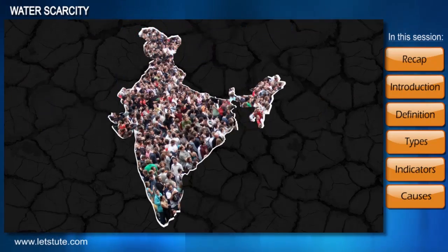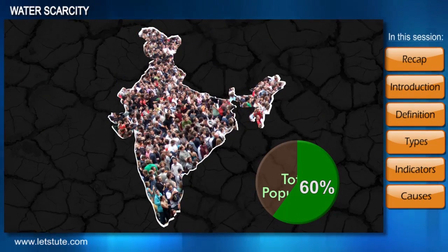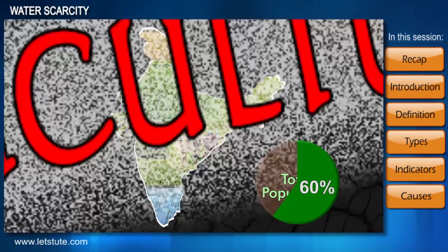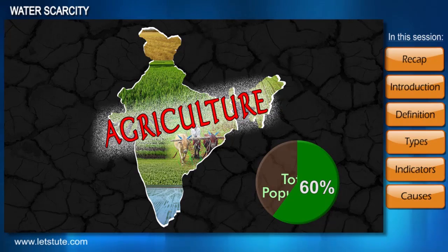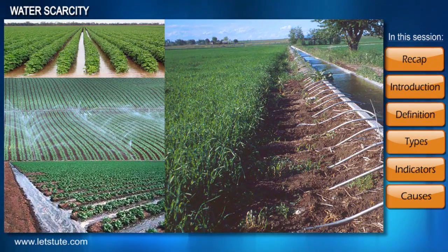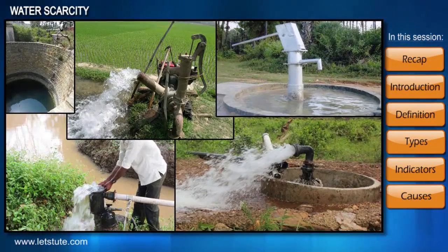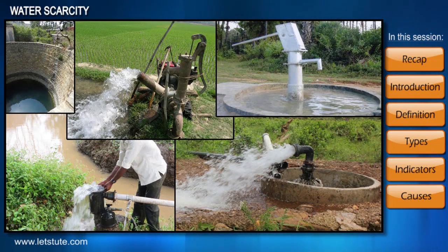Nearly 60% of the Indian population depends on agriculture for their livelihood and uses nearly 90% of all water for irrigation. Farmers have exploited groundwater resources through uncontrolled use of borewell technology, as proper irrigation facilities are not adequately available across the country.